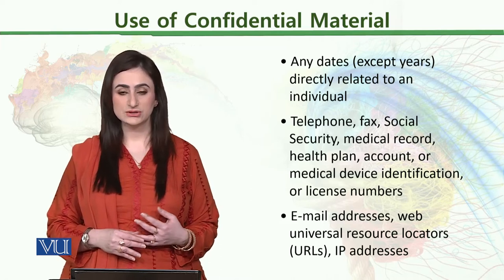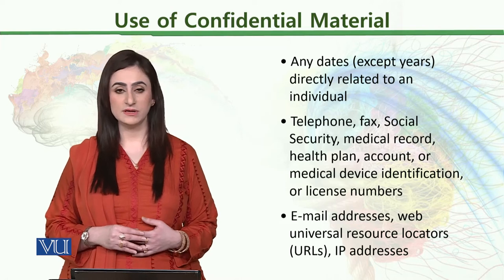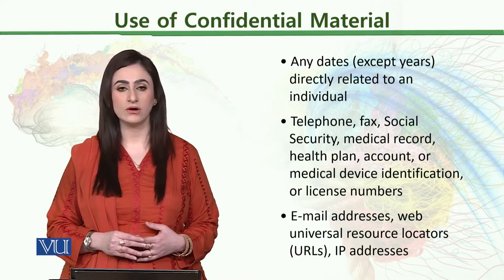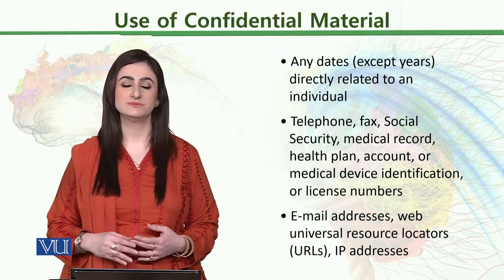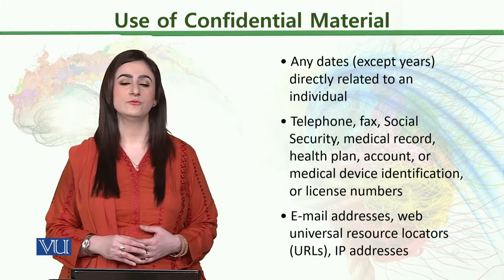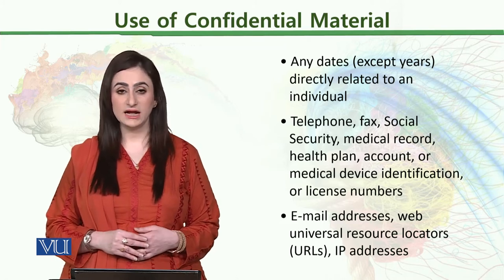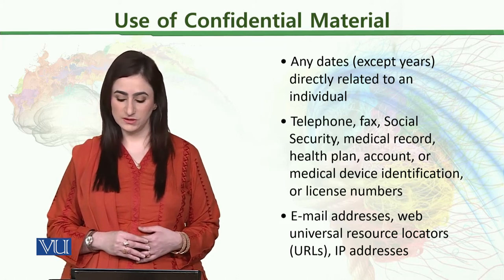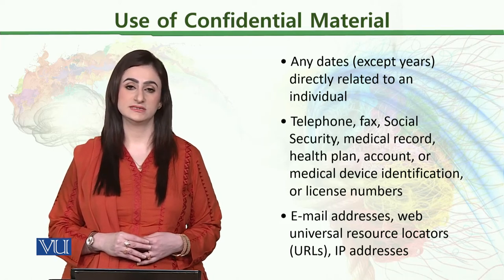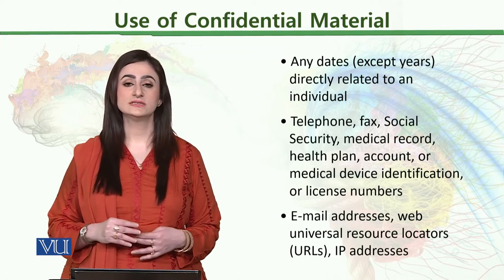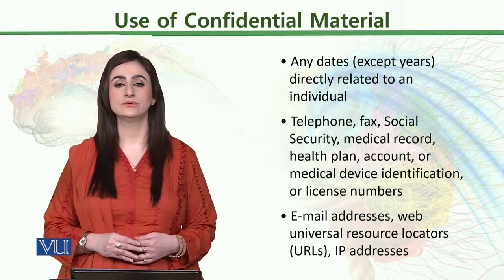Telephone numbers, fax numbers, social security numbers, medical records, health plan numbers, account numbers, medical device identification or license numbers are identifiers which must be removed before presenting any case. Email addresses, web universal resource locators (URLs), and IP addresses — all of these can be used to easily track an individual's information.